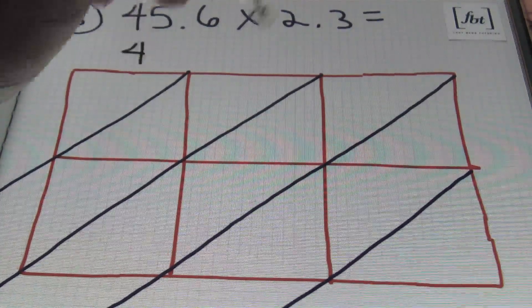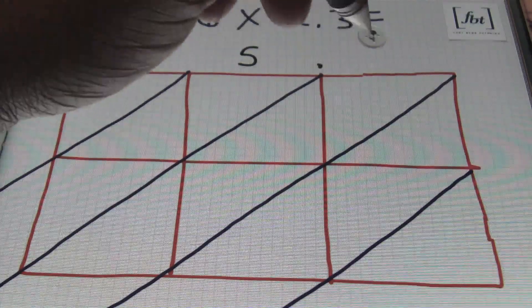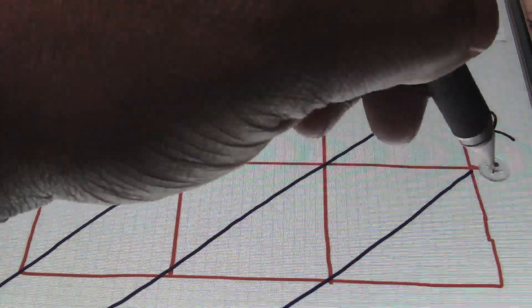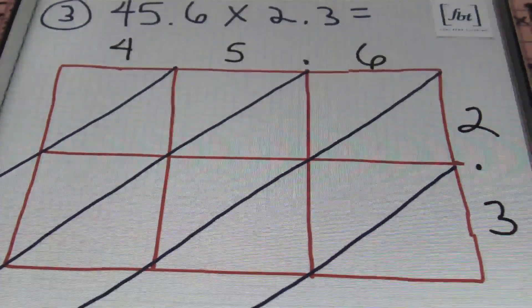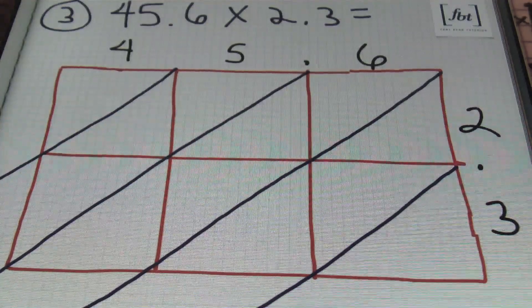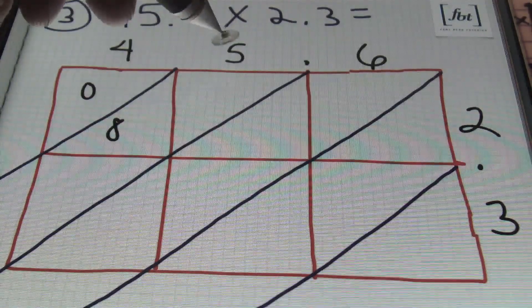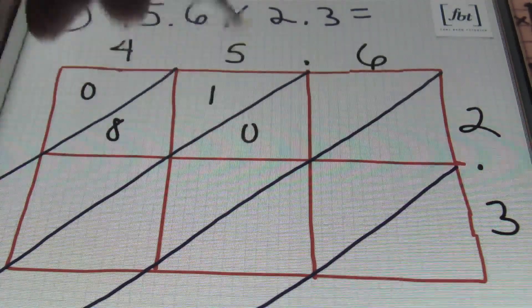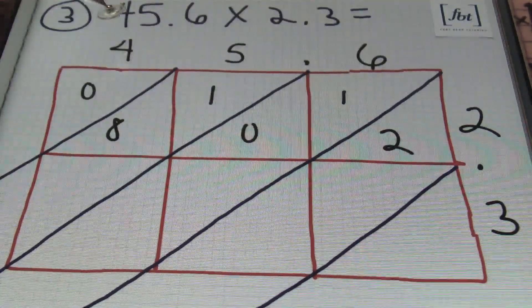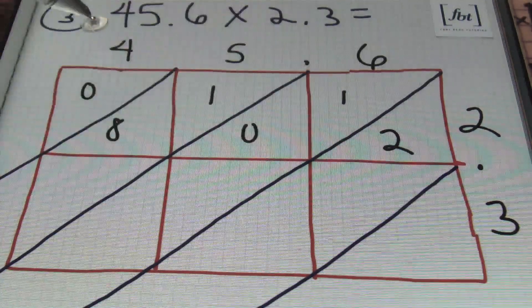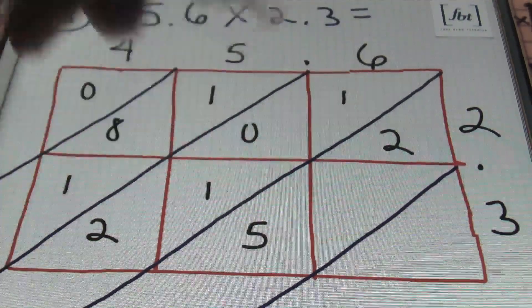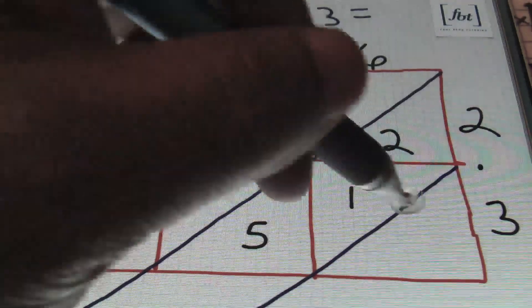I'll start by placing my four here, my five here — you can even put a decimal here to remind yourself where it is — then my six. Along the right side vertically, I'll have a two, then show a decimal, then the number three. From there I'll multiply just as in the previous problems. Four times two is eight, so zero eight. Five times two is ten, so one and zero. Six times two is twelve, so one and two. Then multiplying everything by three: four times three is twelve, so one and two. Five times three is fifteen, so one and five. Six times three is eighteen, so one and eight.